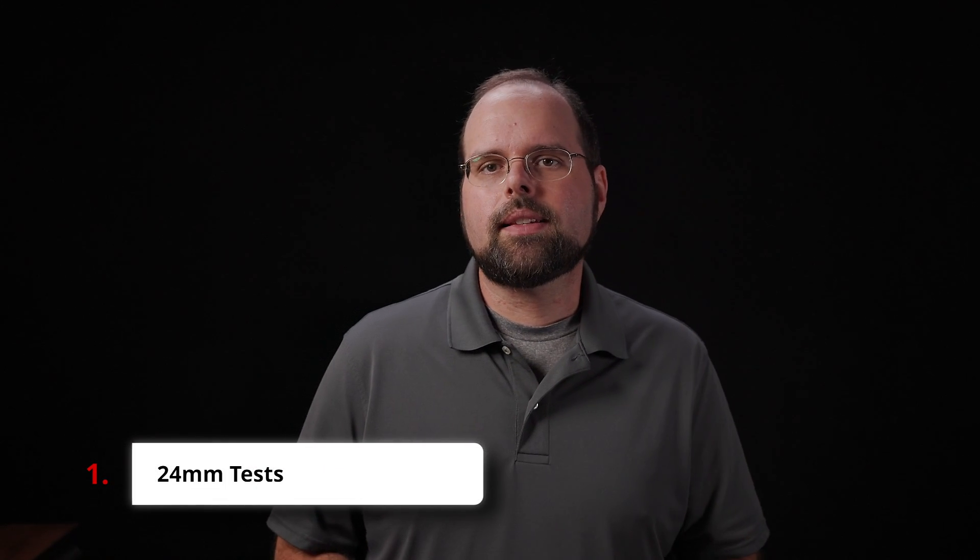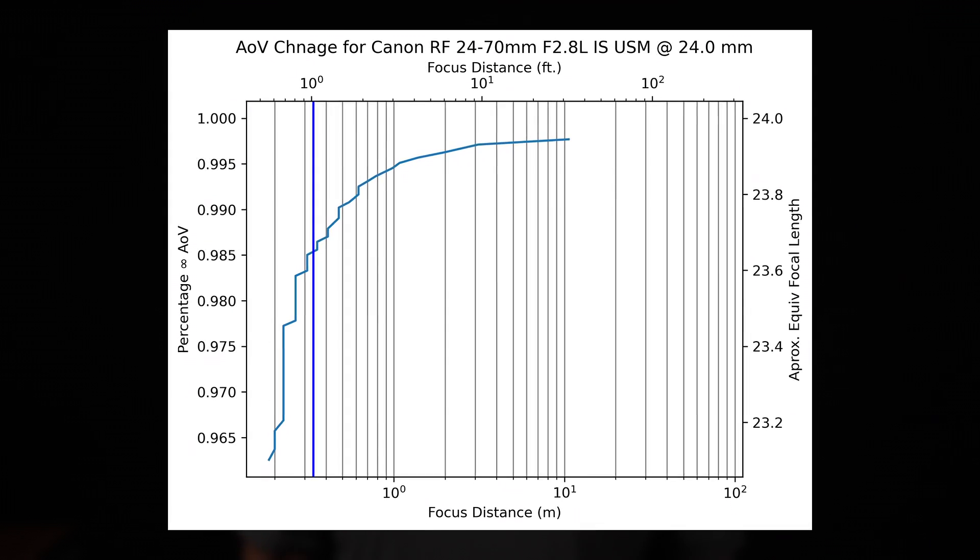So at 24 millimeters, the total amount of focus shift is, as I said, just under 4% wider. This means that at the minimum focusing distance, you'd have an angle of view on this lens equivalent to approximately a 23.1 millimeter lens. And the first 2% of that shift happens between 300 millimeters and infinity, or about a foot and infinity.